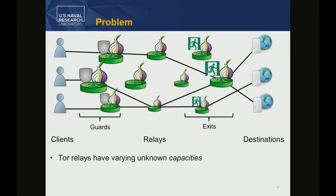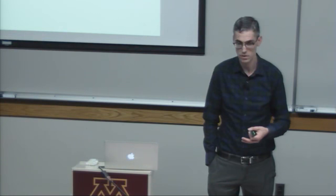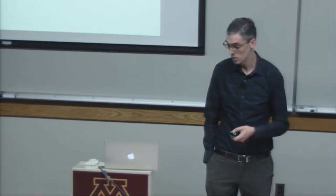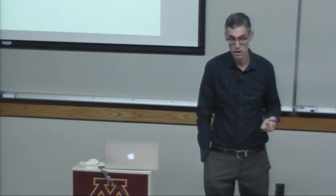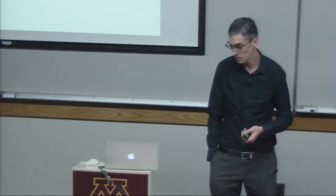As our last speaker was discussing, the relays are not uniform in terms of the resources they provide to the network. Some relays have a lot of bandwidth and some have relatively less. Because the major function of a relay is to receive and send traffic, TOR doesn't know exactly what these bandwidths are because the relays are run by volunteers who might not know how to report it, or who we can't fully trust.